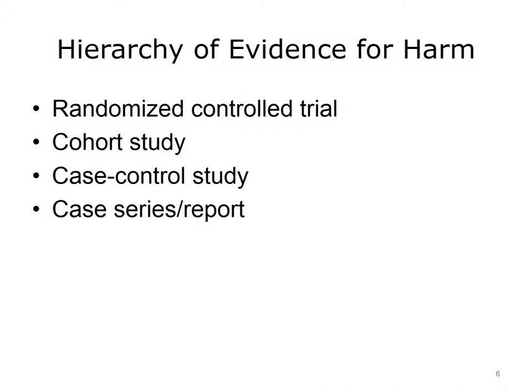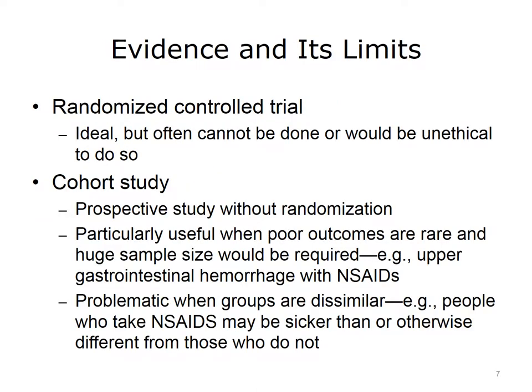When assessing studies of harm, we essentially have a hierarchy of evidence. A randomized controlled trial provides the best form of evidence, and often we can use one to determine harm. The next best study is a cohort study, followed by a case control study, and then a case series or individual case report — the weakest form of evidence. Although a randomized controlled trial would provide the best evidence for harm, it often can't be done, or it would be unethical to do so. Therefore, we have to use lesser forms of evidence.